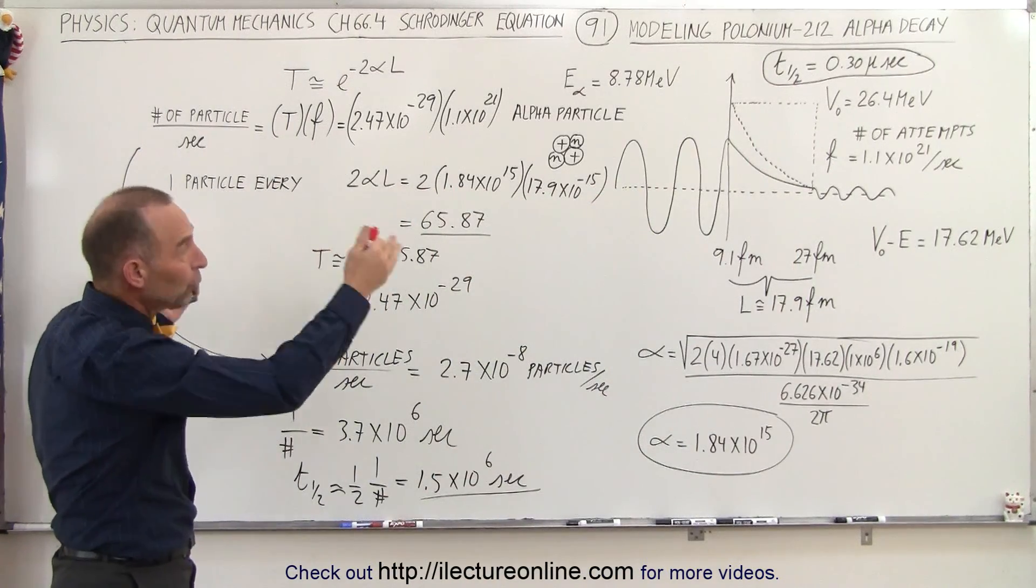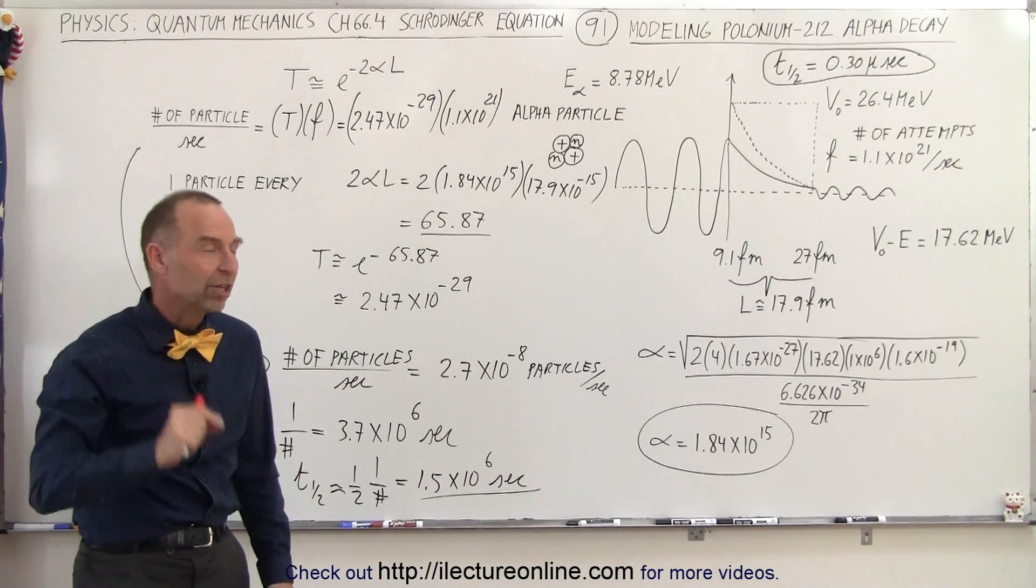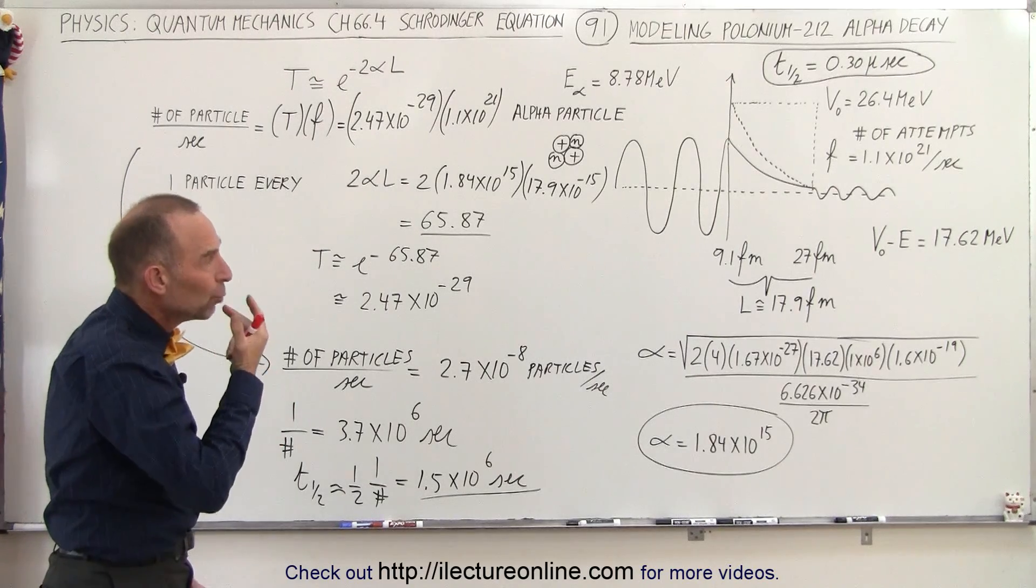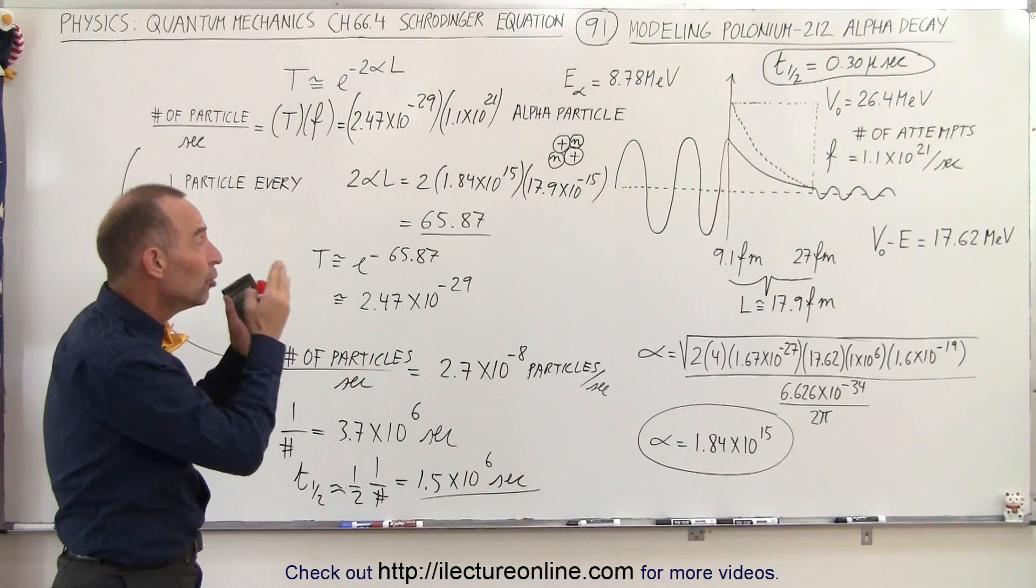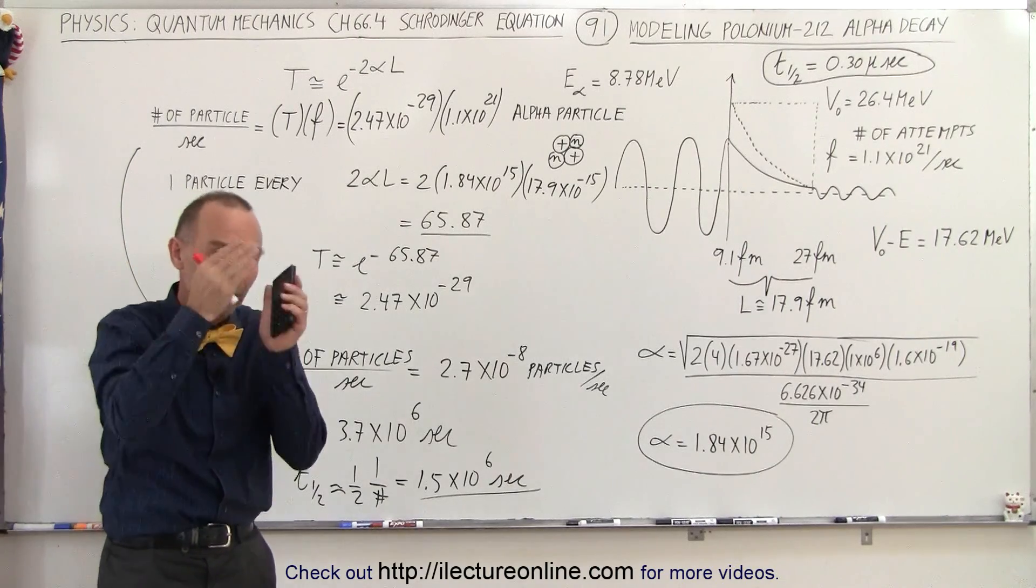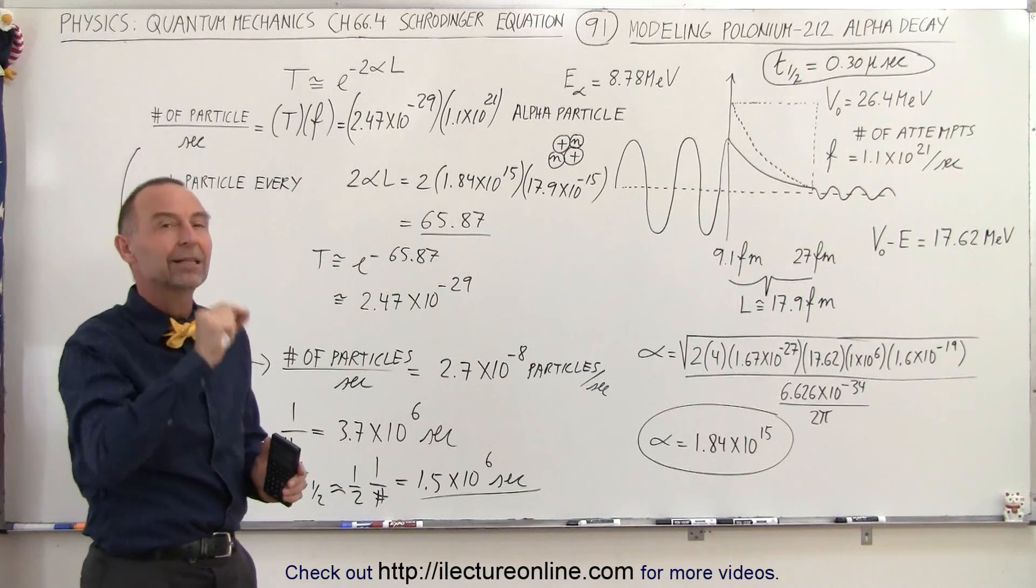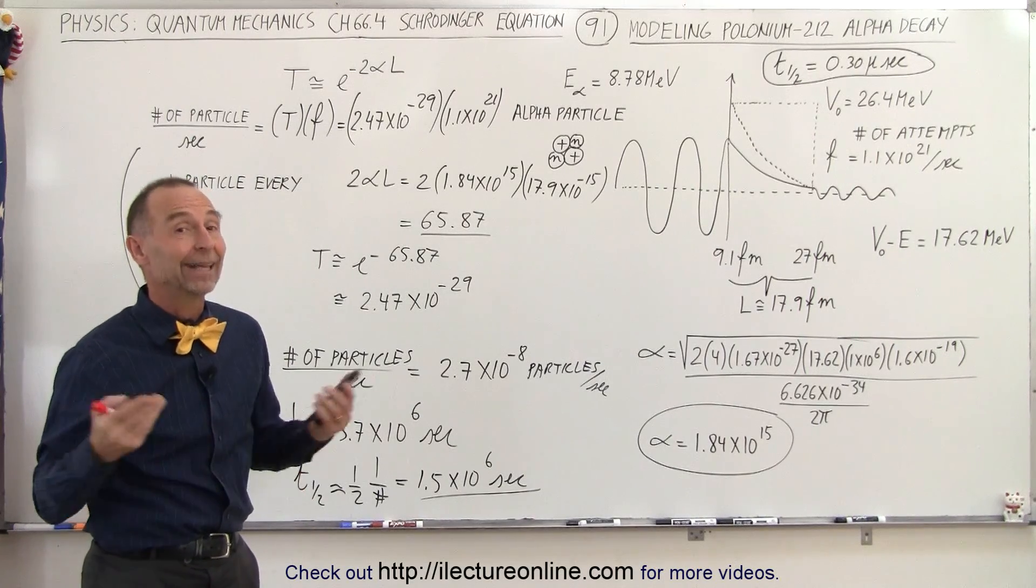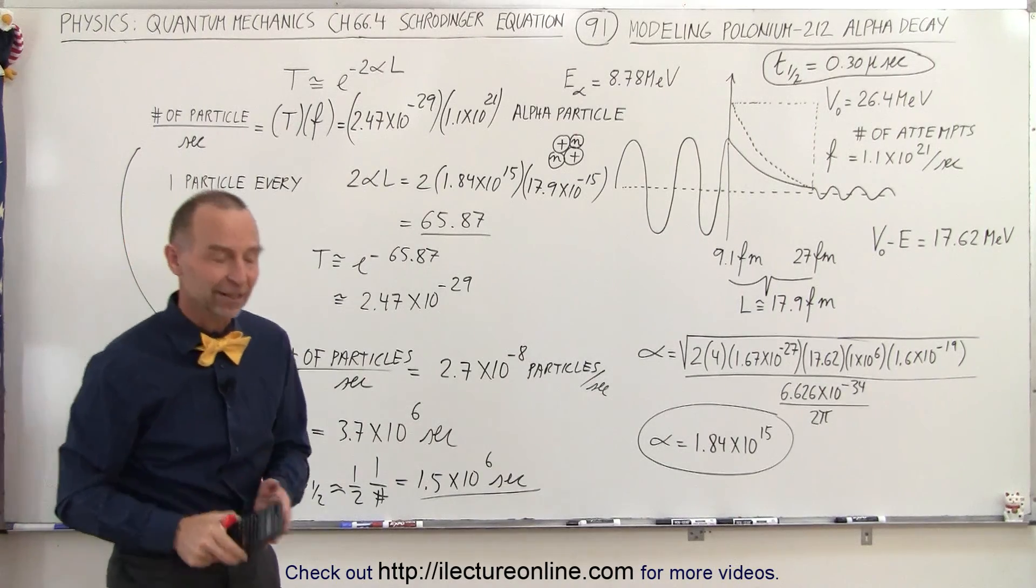At least this is how we would do it if the barrier was square. Now we realize the barrier isn't square, so I have a special technique to figure out how to come up with a reasonable model for alpha decay in polonium-212 using subsections. What we're going to do is divide the barrier up into small sections and calculate the probability through each section. And that's how it should be done. So stay tuned and we'll show you how that's done in the next video.